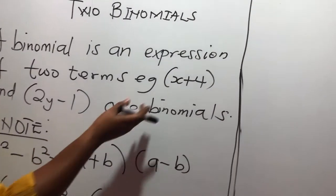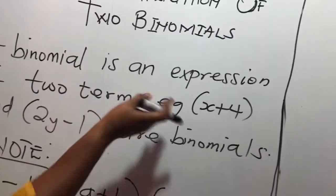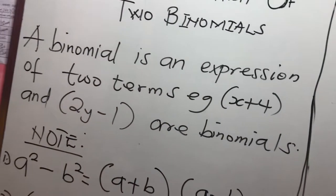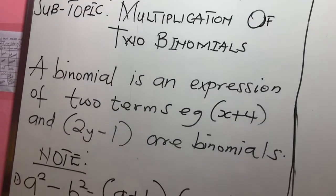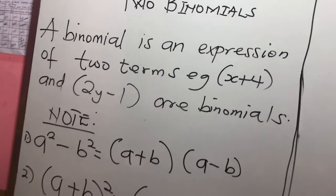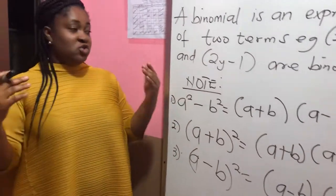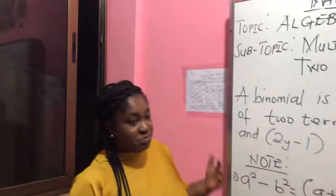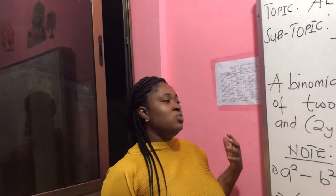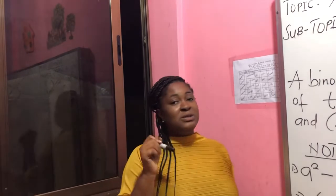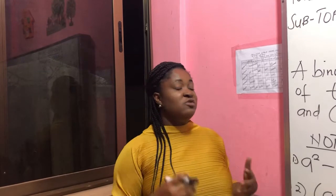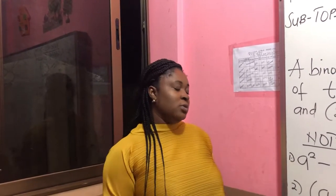Most of the time you'll be asked to multiply two binomials. When you are given something like this, we go by using the distributive property — we use each member in the first bracket to multiply each member in the second bracket. The distributive property is used to deal with multiplication of binomials.